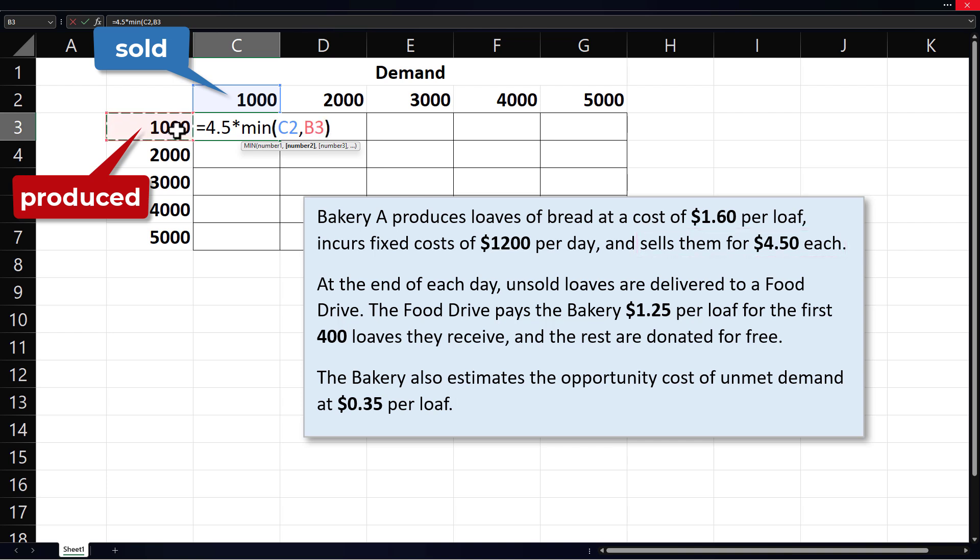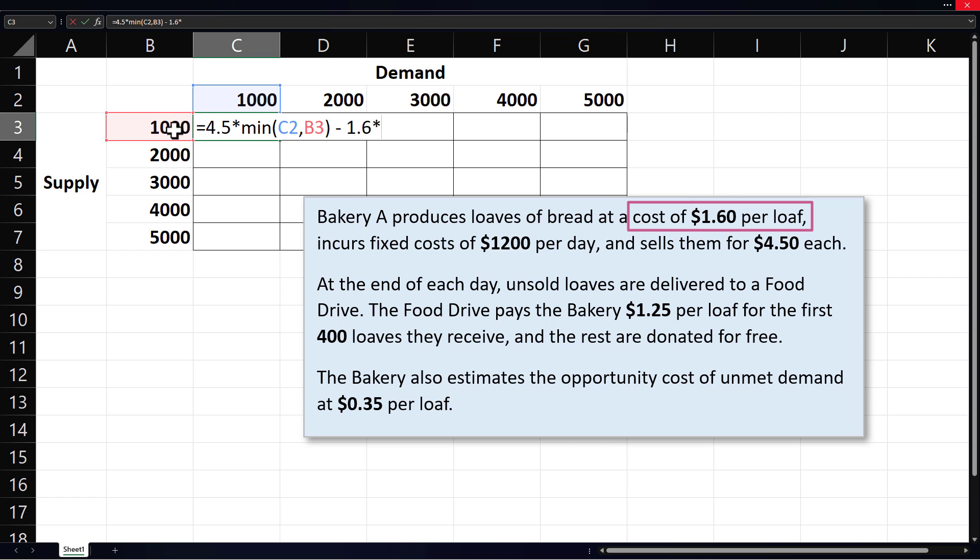Next we subtract production costs. Variable cost is 1.6 times the number of units produced plus the fixed cost of $1,200.